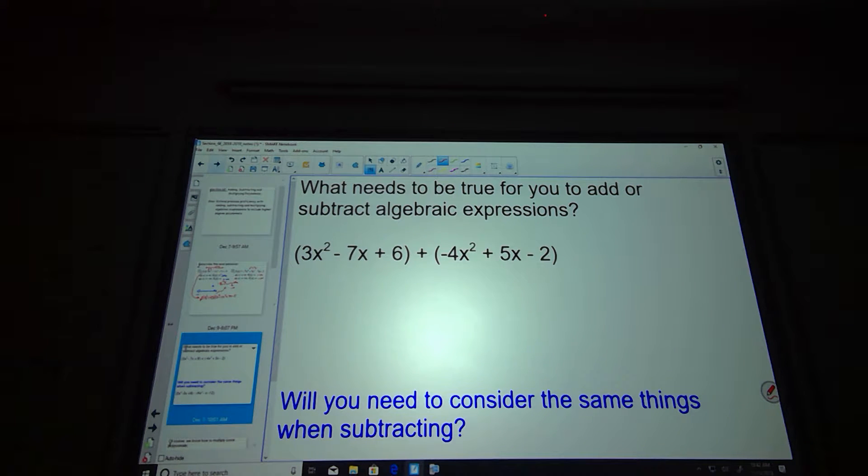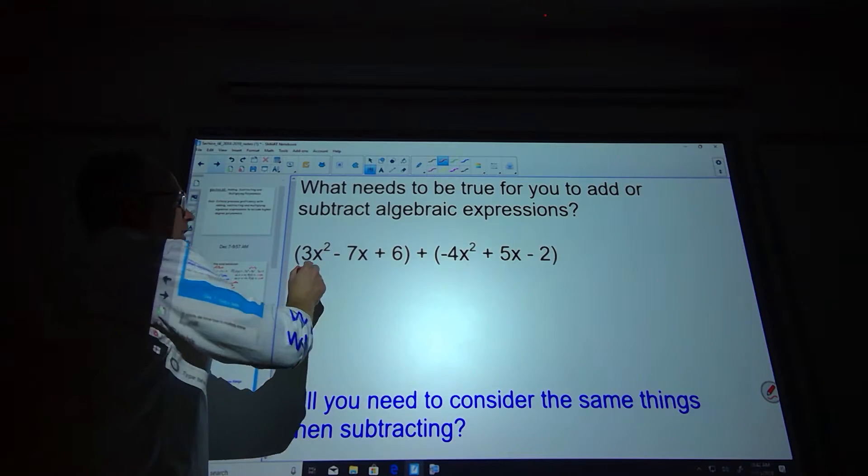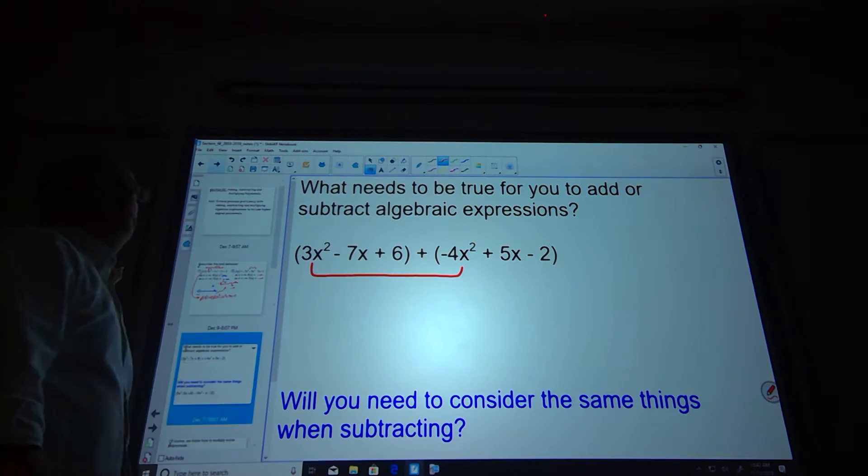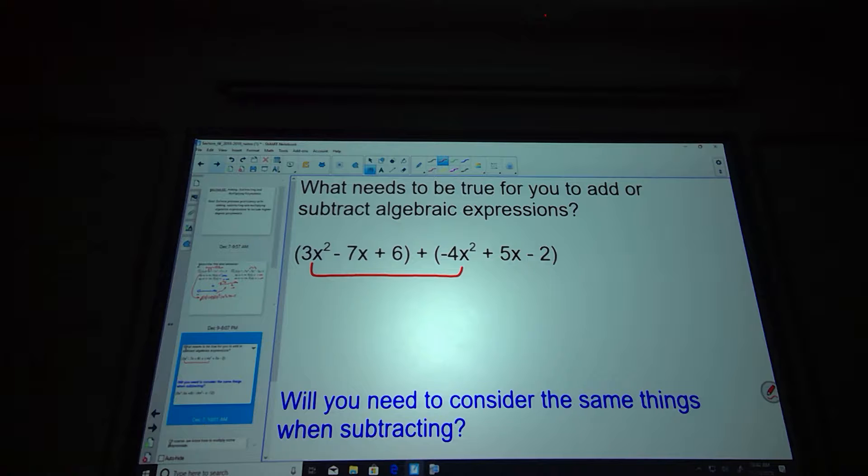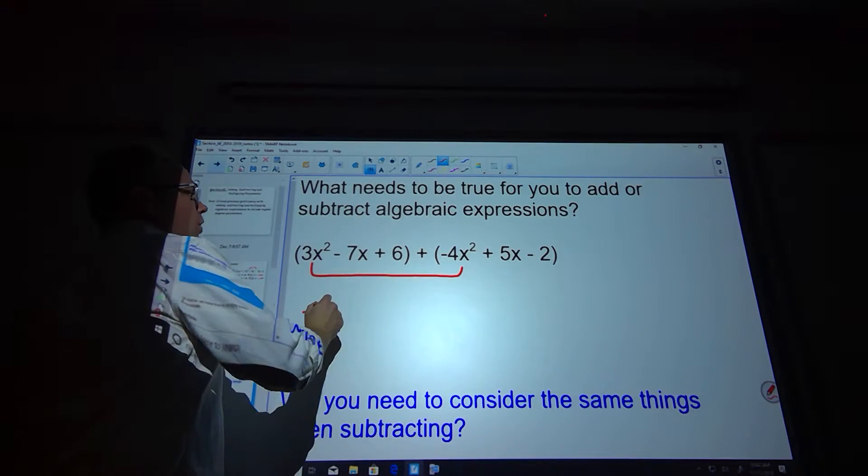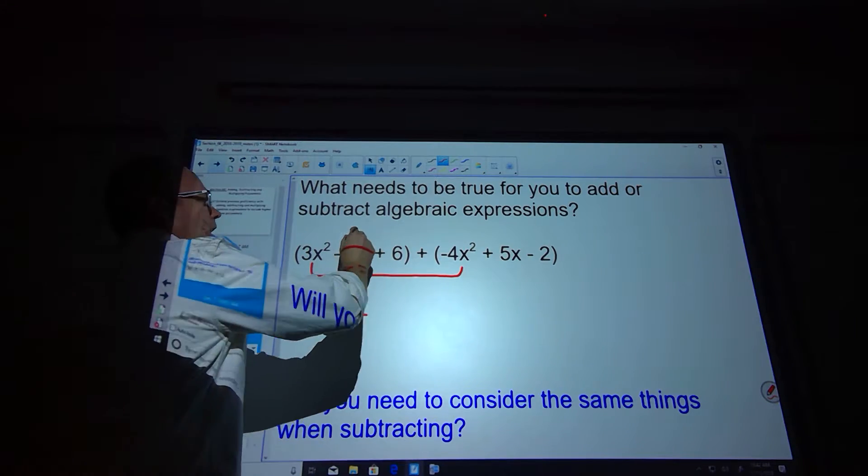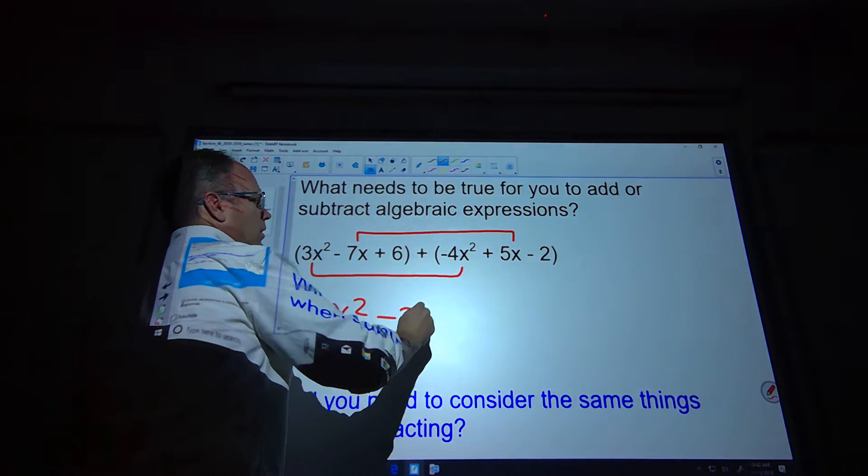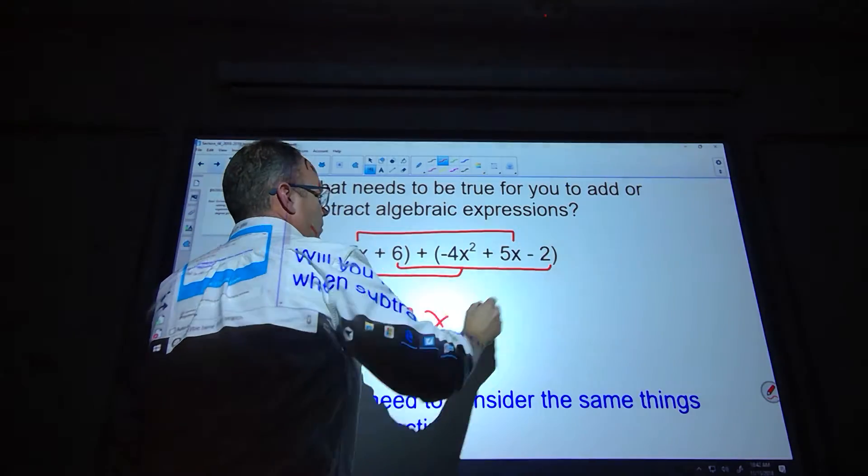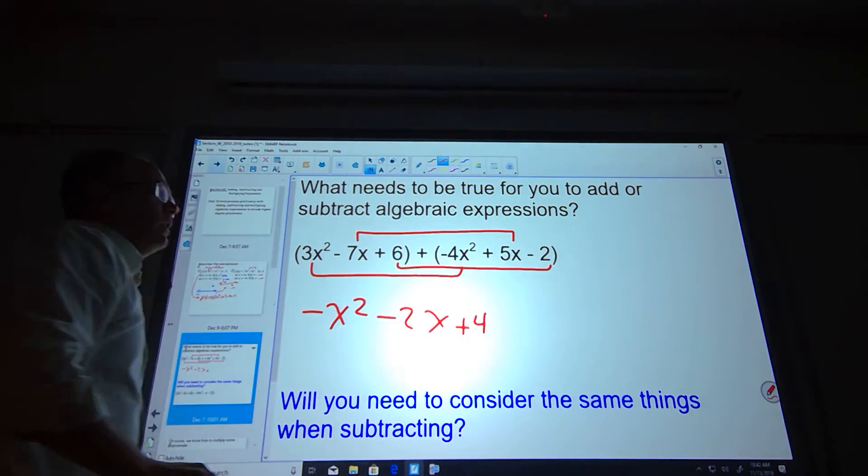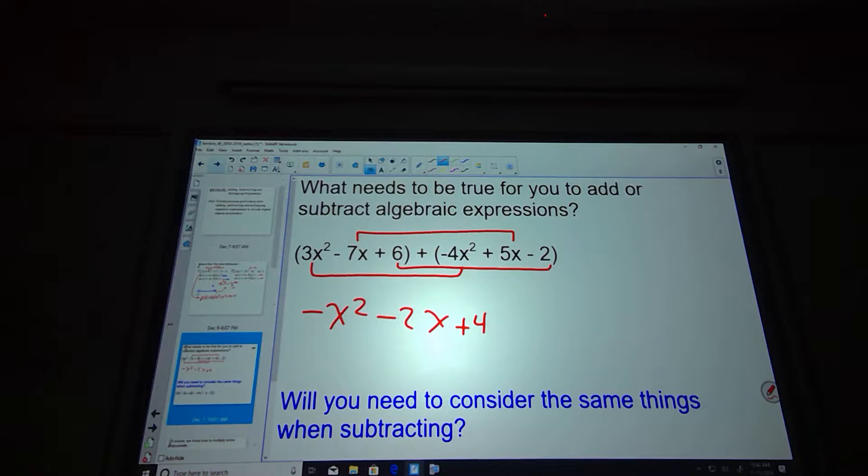So when we add or subtract these, so if I were to add these, I'm just going to combine like terms. So are those like terms? And if they are, why are they like terms? Both have the same exponent, and they both have the same letter as well, right? Cool. So I'm going to combine those, and then I'm going to combine these, and then I'm going to combine that. Okay. Now, some people might say, where is this happening in the real world? Okay?